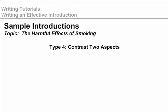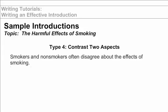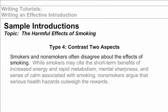Type 4: Contrast two aspects or perspectives of the topic. Smokers and nonsmokers often disagree about the effects of smoking. While smokers may cite the short-term benefits of increased energy and rapid metabolism, mental sharpness, and a sense of calm associated with smoking, nonsmokers argue that serious health hazards outweigh the rewards. In this introduction, the writer presents both positive and negative effects of smoking. The paragraph might go on to articulate the harmful effects of smoking to be discussed in the body of the essay.